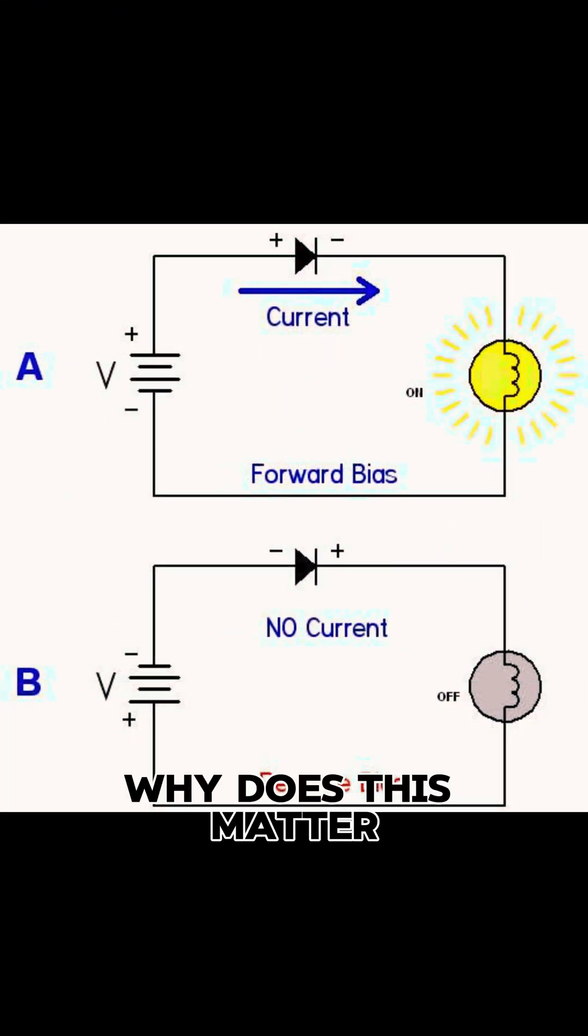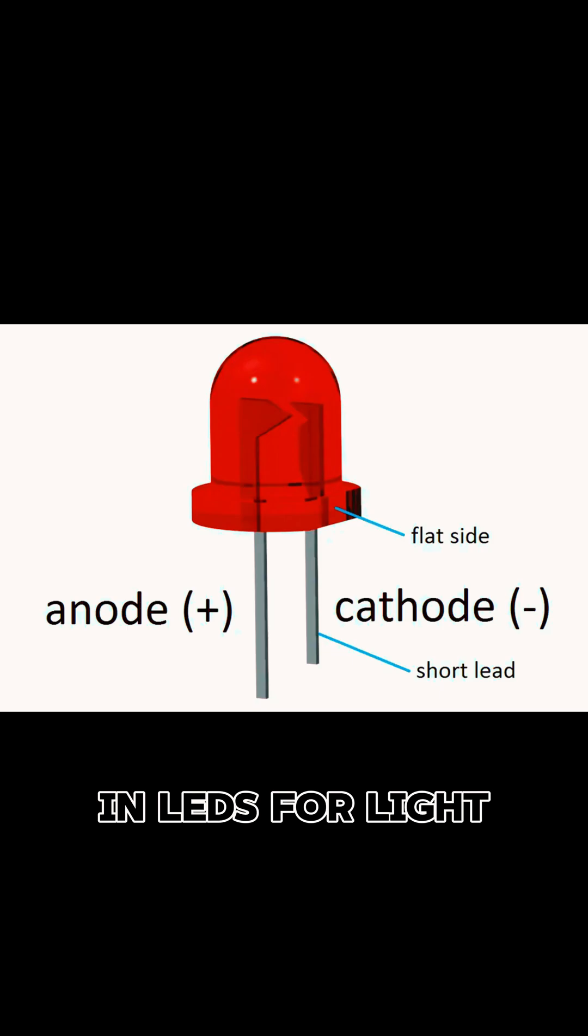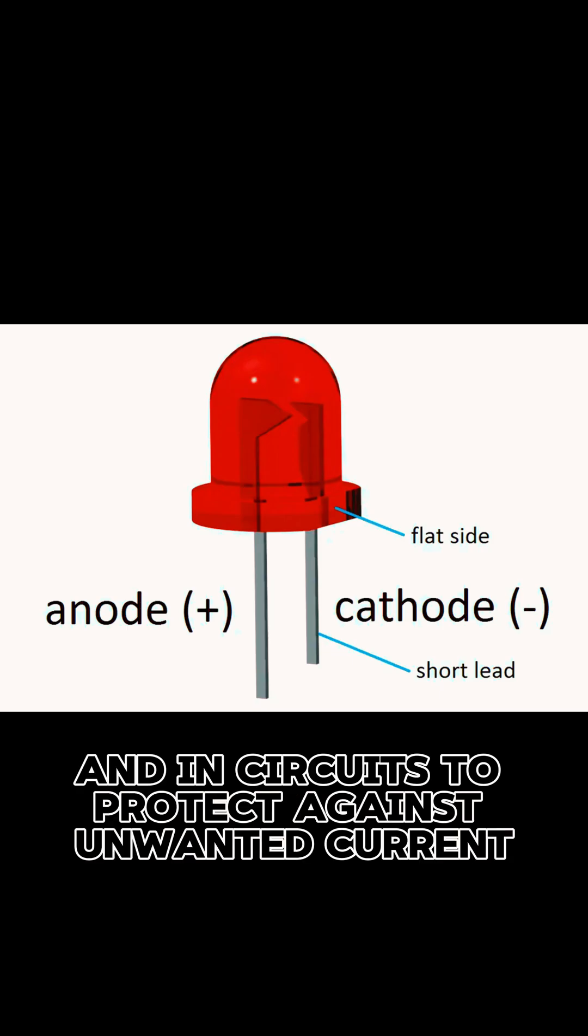Why does this matter? Diodes are essential in electronics. They're used in rectifiers to convert AC to DC, in LEDs for light, and in circuits to protect against unwanted current.